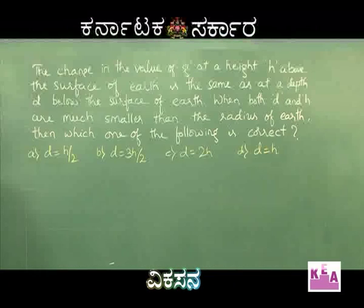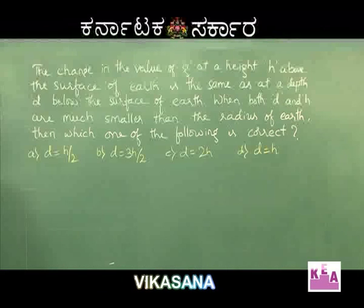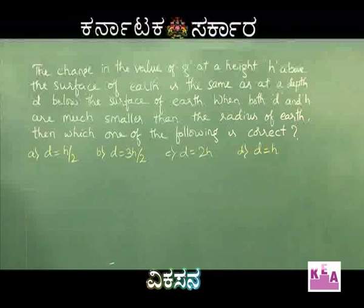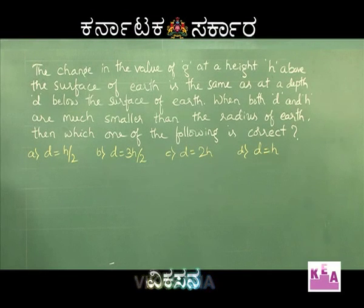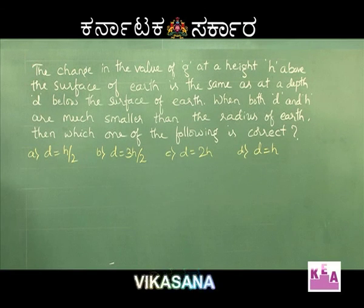The next problem: the change in the value of g at a height H above the surface of earth is the same as at a depth D below the surface of earth. When both D and H are much smaller than the radius of earth, which of the following is correct? Options: A — D = H/2, B — D = 3H/2, C — D = 2H, D — D = H.